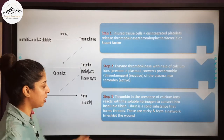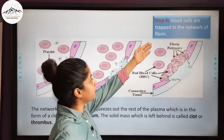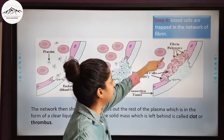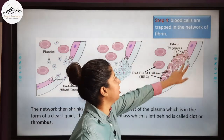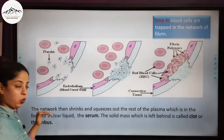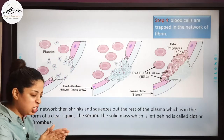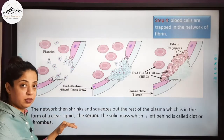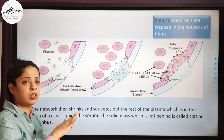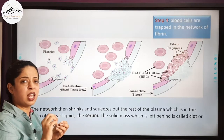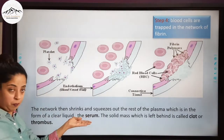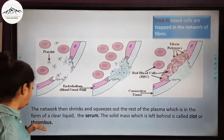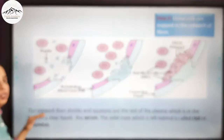In Step 4, blood cells are trapped in the network of fibrin. This network then shrinks and squeezes out the rest of the plasma in the form of a clear liquid. That yellowish-colored liquid you see oozing out of a wound is serum, and the solid mass which is left behind is called a clot or thrombus.